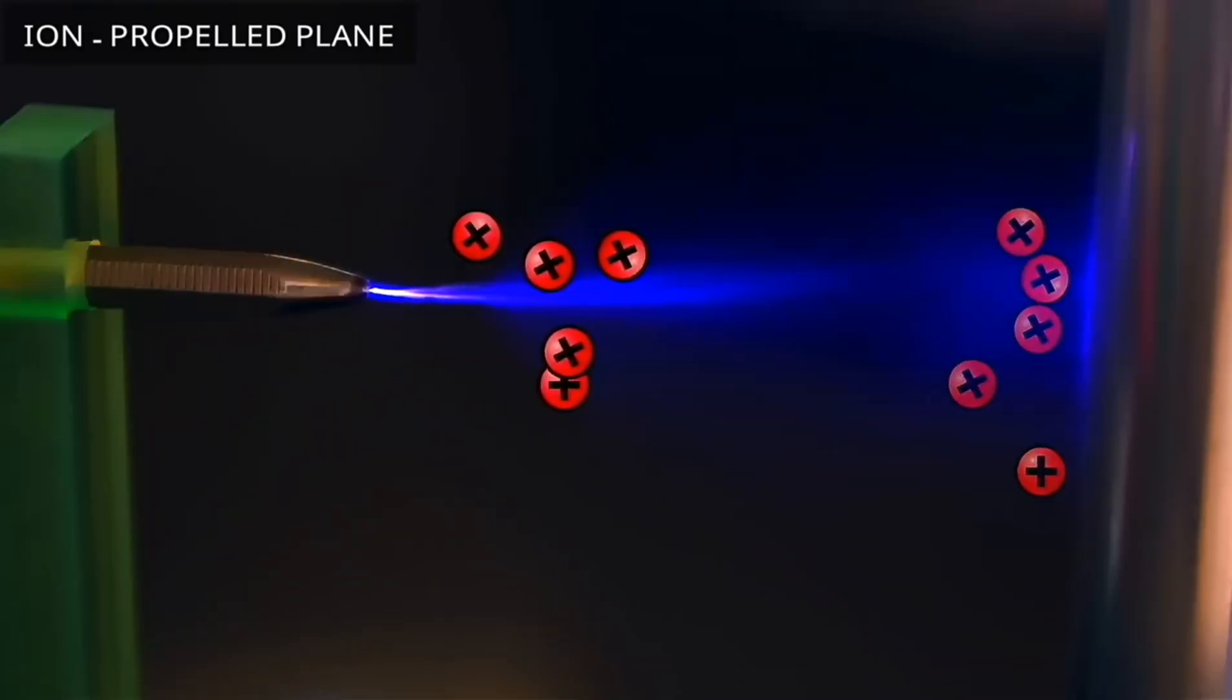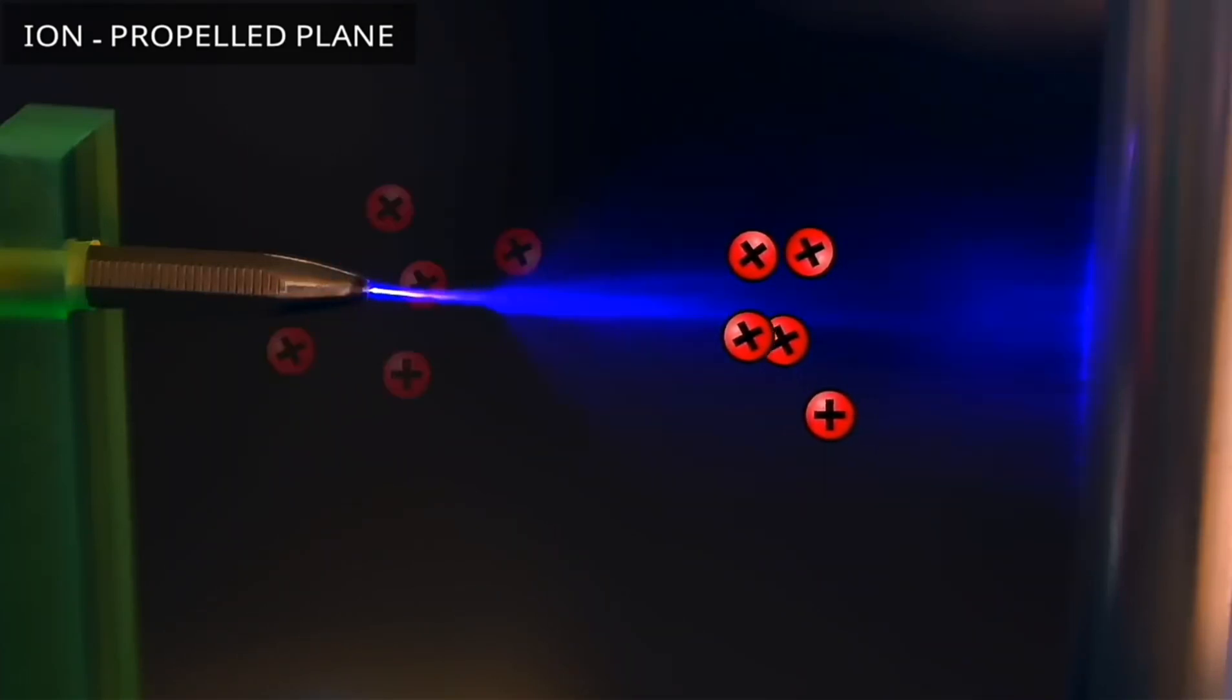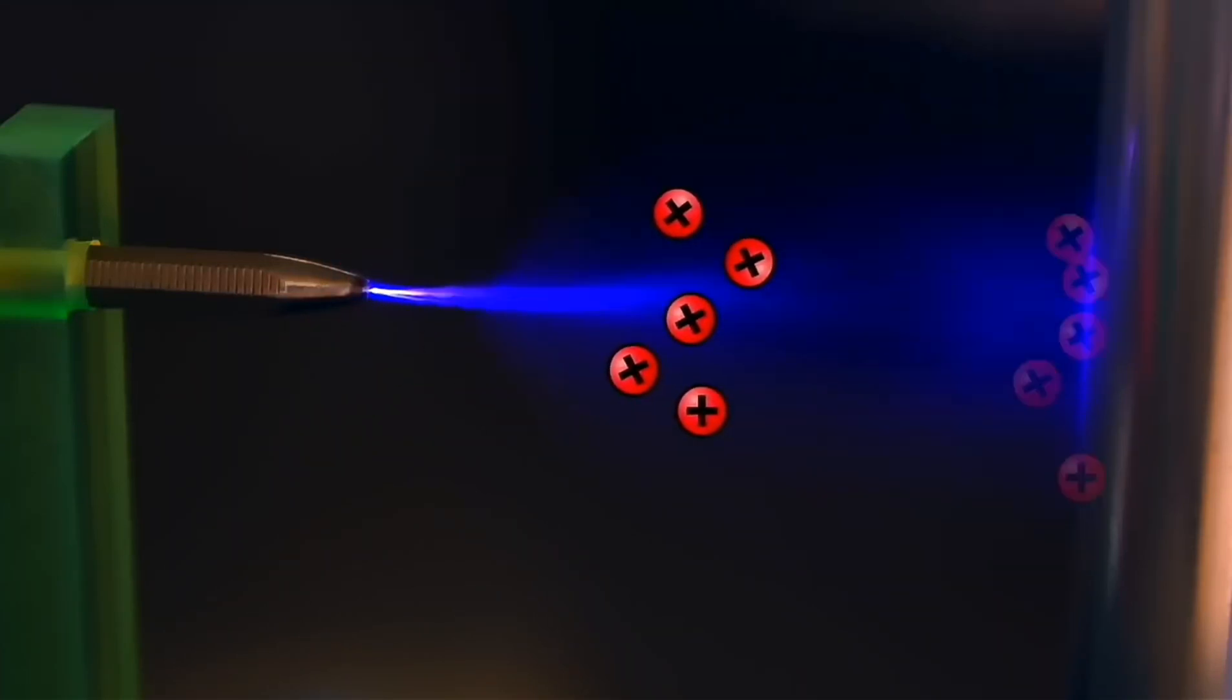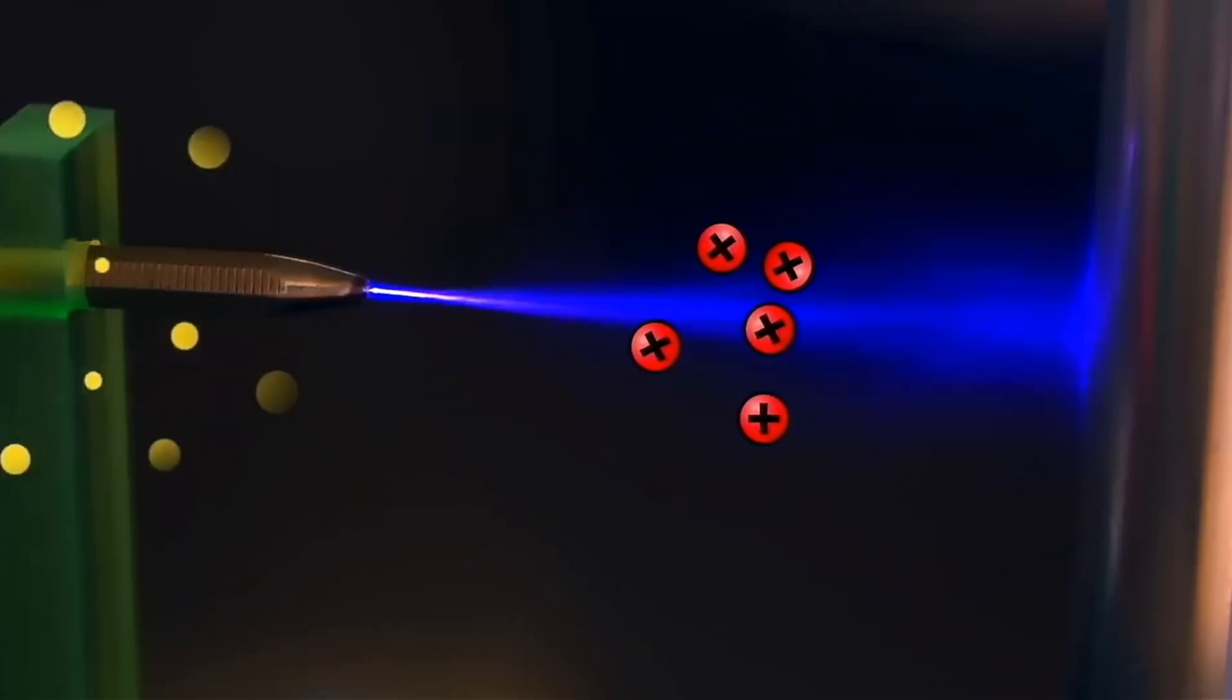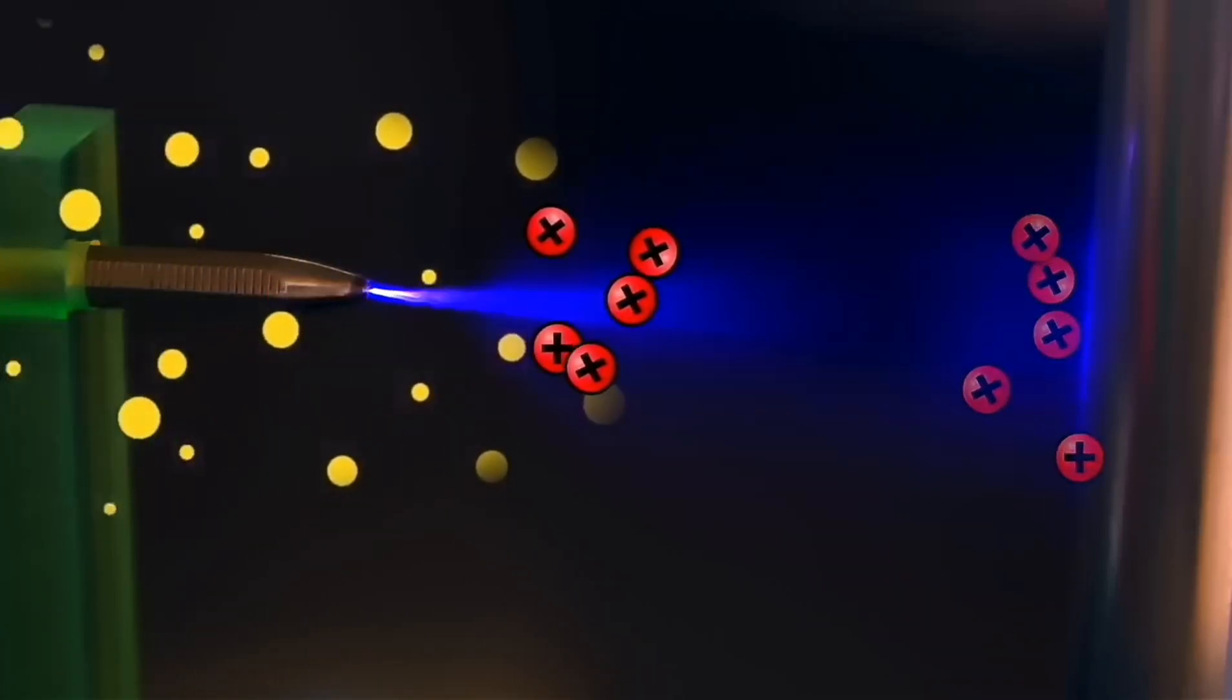The newly ionized air molecules are then attracted to the negative electrodes at the wing's trailing edge. This priority creates the ionic wind that forces air around the wings, creating lift and thrust.